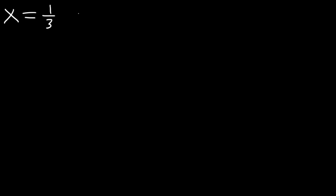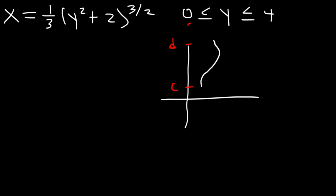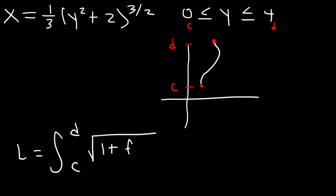Now for the next example. Let's say that x is equal to 1 over 3 times y squared plus 2 raised to the 3 over 2, and y is between 0 and 4. What formula should we use if we have the function in terms of y — that is, x in terms of y? If the curve traverses the y axis, c is 0 and d is 4, and we want to find the arc length between those two points. The equation we need is L equals the integration from c to d of the square root of 1 plus g prime of y squared dy.